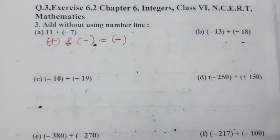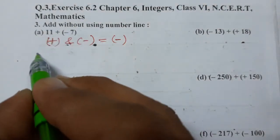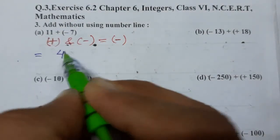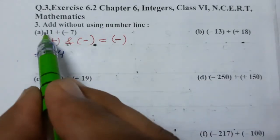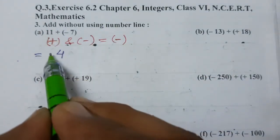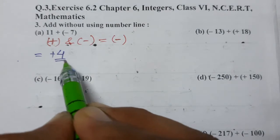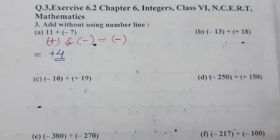So 11 minus 7 is 4, and put the sign of the bigger one. So bigger one is plus 11, so plus 4 or simply 4 we can write. So this is the solution, so simple.